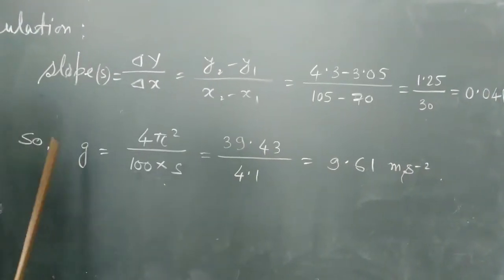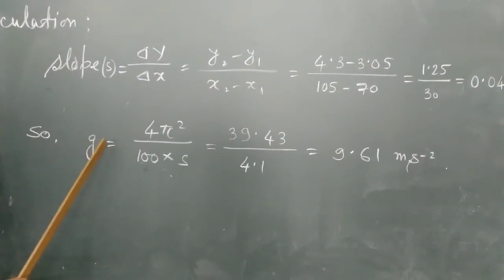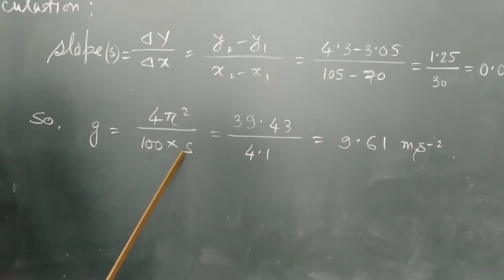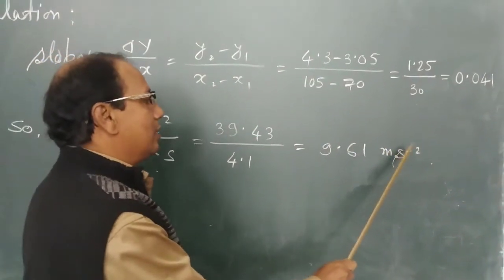at last we will go for calculation of acceleration due to gravity g. g equals 4π² by 100 into S. Putting the value of all we got here 9.61 meter per second inverse 2.